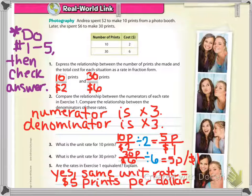Question 3. 10 prints for $2. You're trying to change it to a unit rate, so that's 5 prints per $1. For number 4, 30 prints per $6. Unit rate is 5 prints per $1.